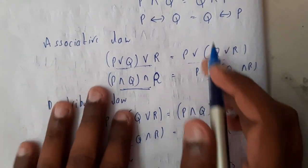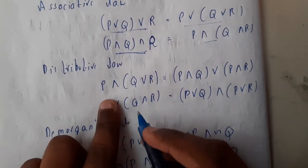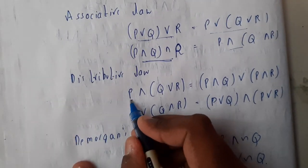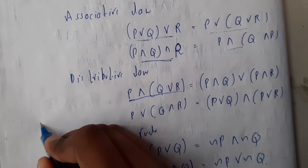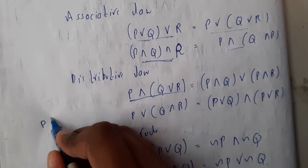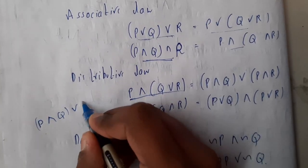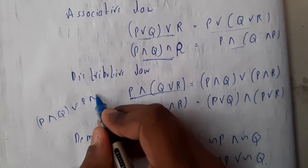Distributive law: please remember it. Practice in this way. If you want to do distribution for this, write initially P and write the next symbol, write the first letter, close it, write the middle one, write the first letter, write the second symbol, and write the last one.